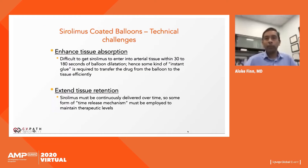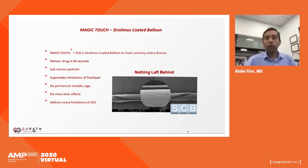Sirolimus is another option, but we need to do two things to improve its use on balloons: enhance tissue absorption — get it into arterial tissue and have it stick — and extend its retention so it provides an anti-restenotic benefit over time.